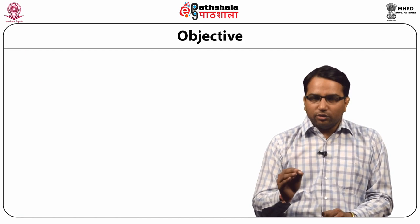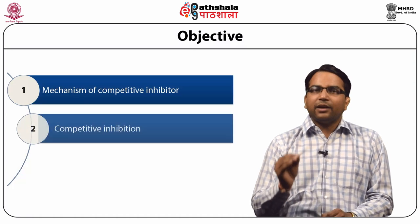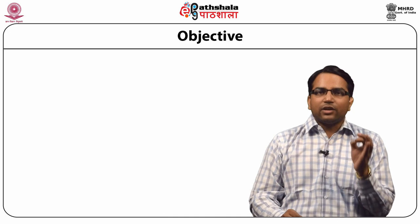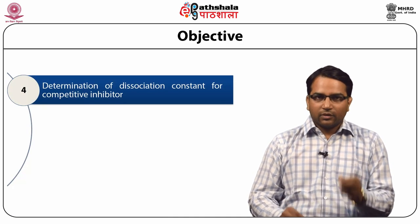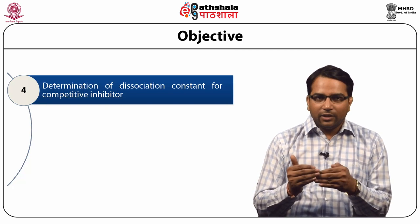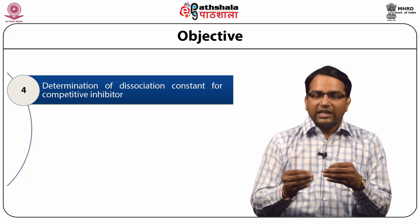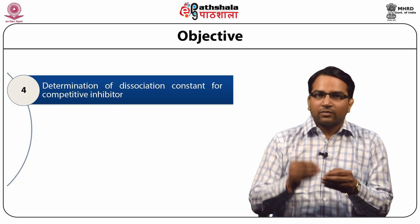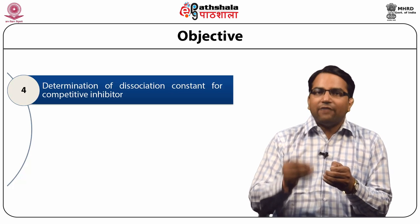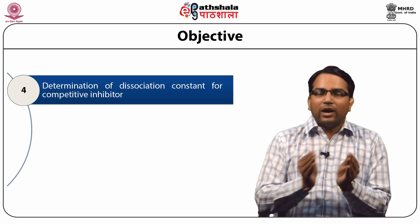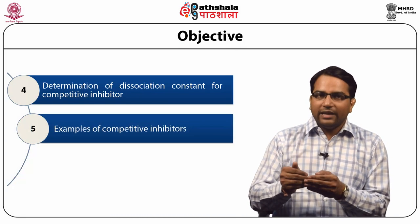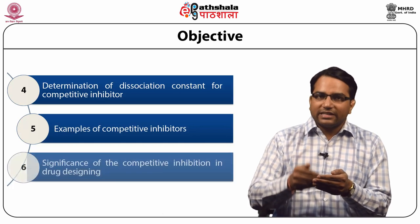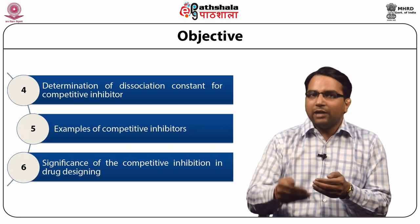The objective of this module is to understand the mechanism behind competitive inhibition as well as its kinetics. We will also discuss the role of the dissociation constant of the inhibitor in drug design. This module will cover: basics of competitive inhibition, mechanism, kinetics, calculation of the dissociation constant, examples, and how the study of competitive inhibition helps in drug designing.